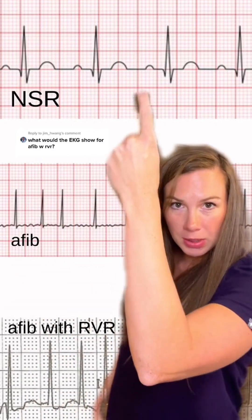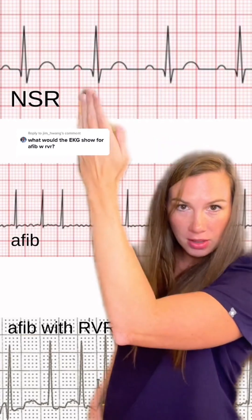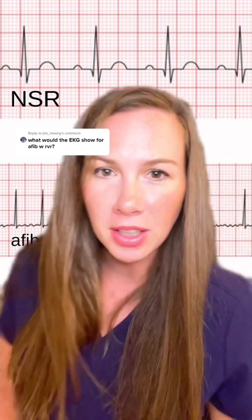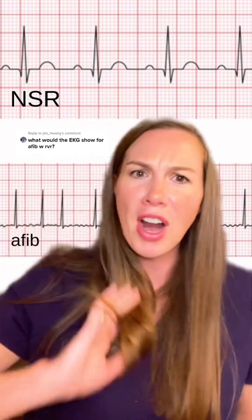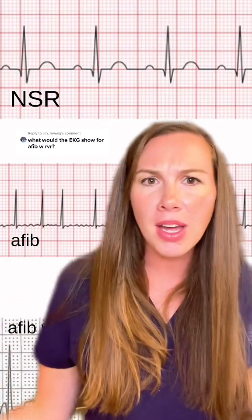Normal sinus: PQRS, PQRS, PQRS — we love it. We have a regular rhythm. We have our ventricles and our atria contracting and relaxing, and we're getting blood everywhere — it's wonderful.